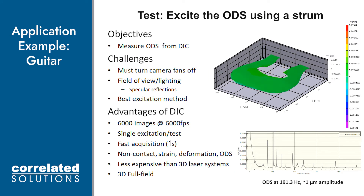In light of the conference's title, 'The Human Experience of Sound and Vibration,' our first application example covers how we used a pair of high speed cameras to measure the strain, deformation, and operational deflection shapes on a guitar. This was a bit of a tough test because we did not know what frequencies to expect. So we captured 6,000 images at a rate of 6,000 frames per second to avoid potential aliasing. With an i7 processor, these images were analyzed in about 45 minutes. The great thing about this measurement technology is that we introduced a single excitation — a strum — captured images for a few seconds, then moved on to post-processing. There was no scanning of the part, multiple excitations weren't necessary, and no equipment needed to be repositioned.